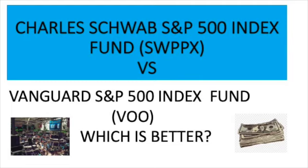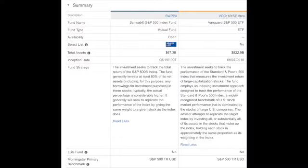Today we're going to compare the Charles Schwab S&P 500 Index (SWPPX) to the Vanguard S&P 500 Index (VOO). VOO is very popular — everyone knows that one. Let's see which is better. Before you invest in anything, talk with your financial planner. I am not a financial planner — do your research.